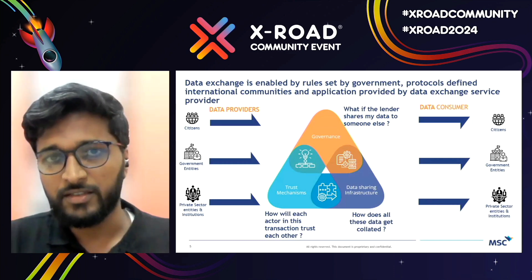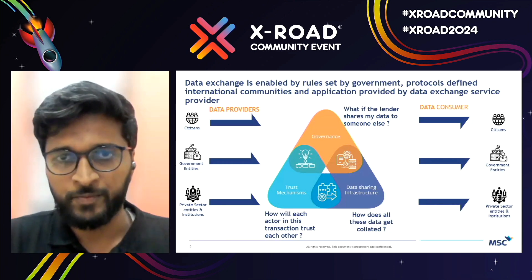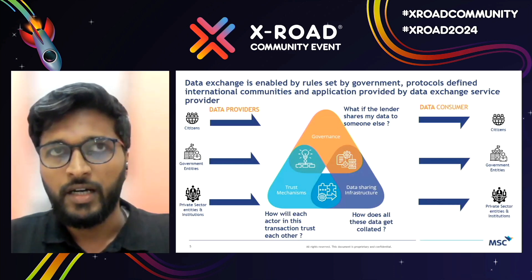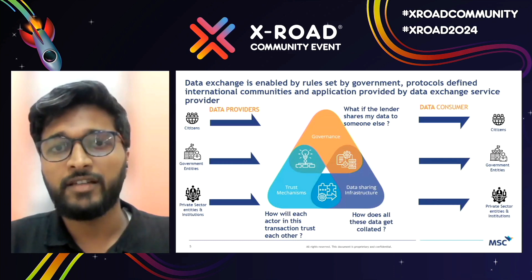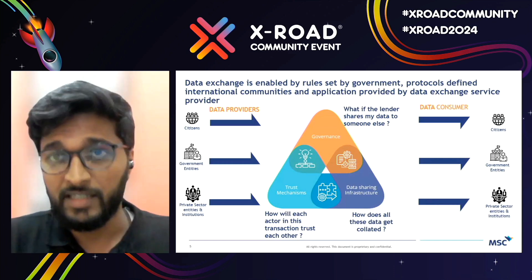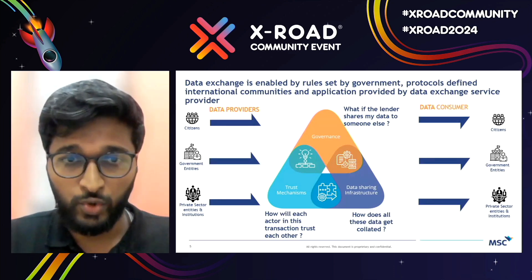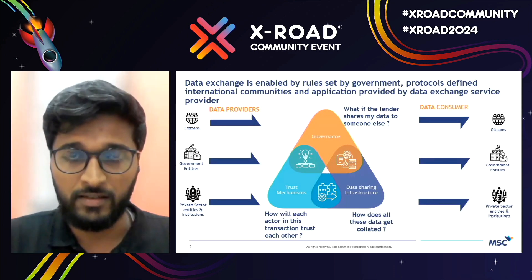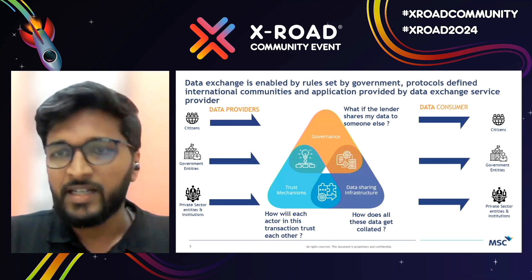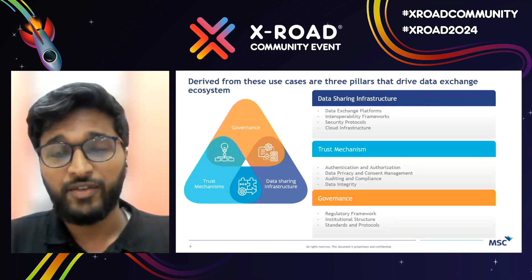The framework has three pillars. One is governance, the second is data sharing infrastructure, and the third is trust mechanism. The first question — what if the lender shares my data to someone else? — cannot happen because there are governance mechanisms put in place by the government. Trust between actors is handled by protocols defined by international communities, and data collation happens through data sharing infrastructure. These three pillars are essential for data exchanges.